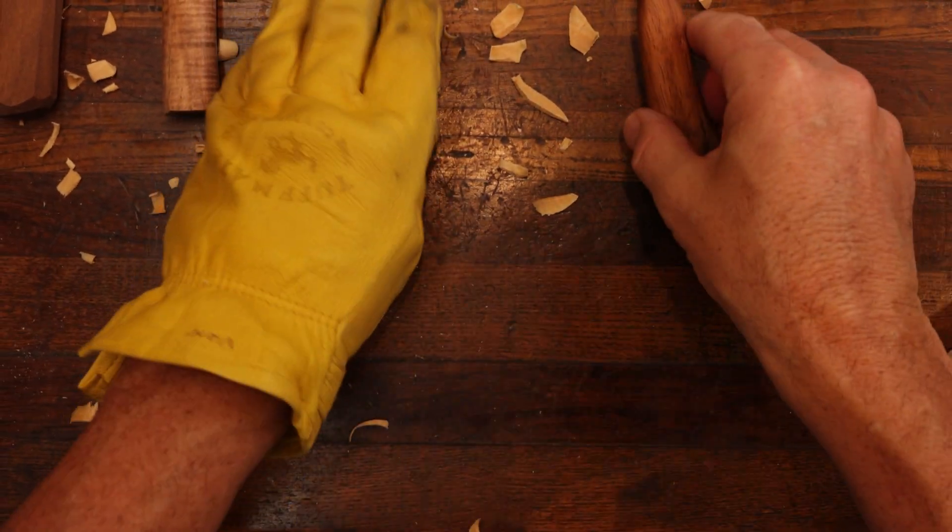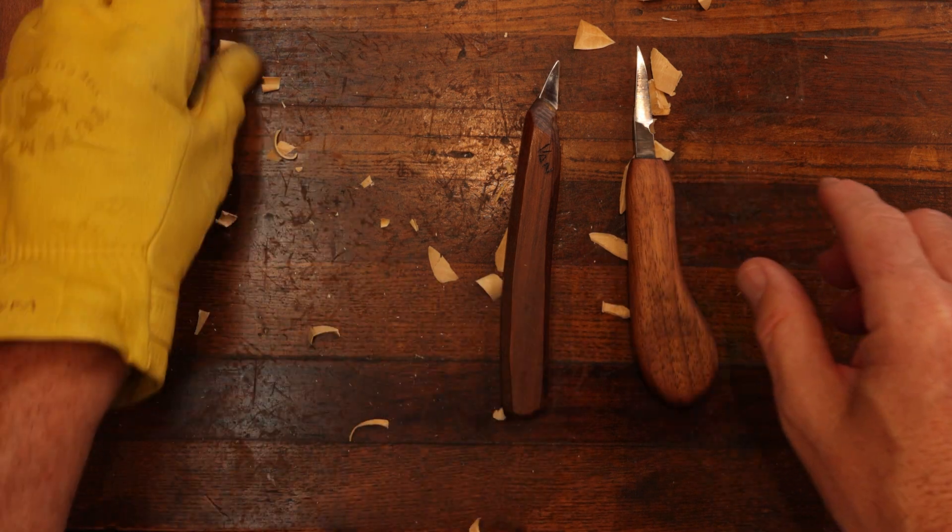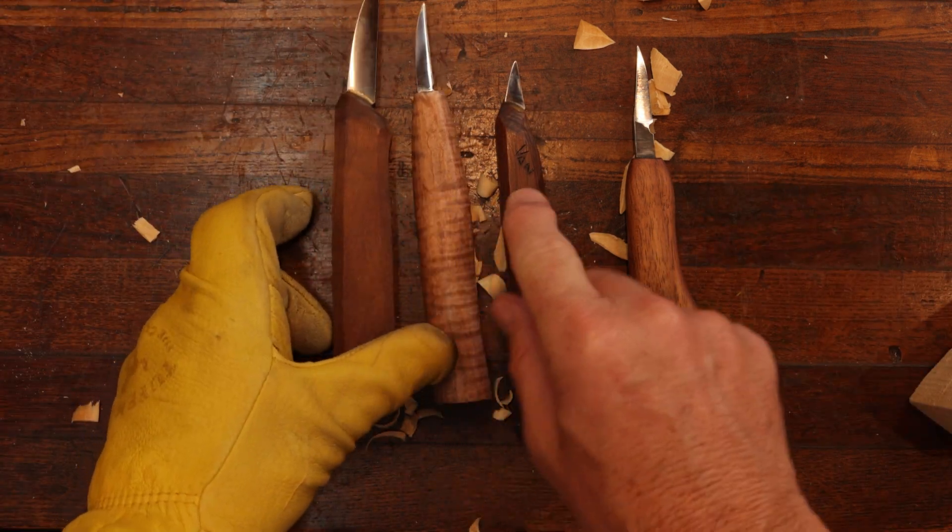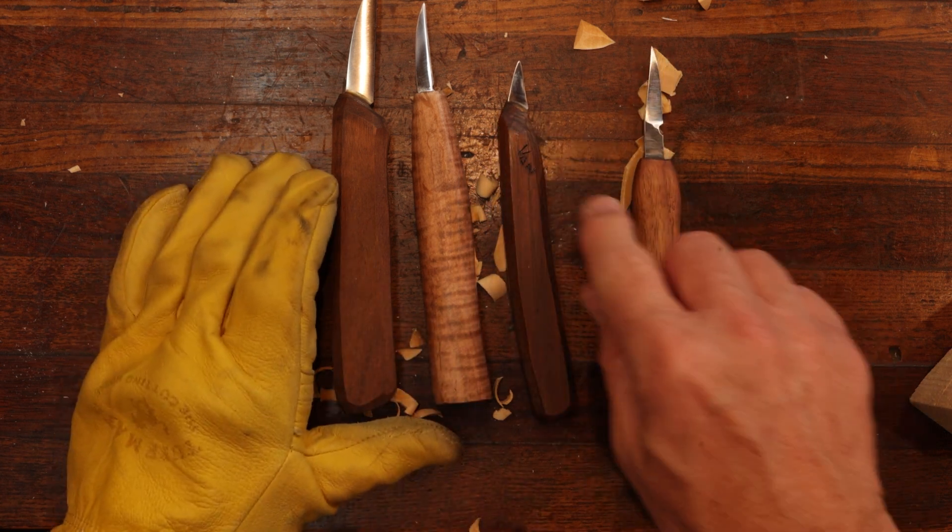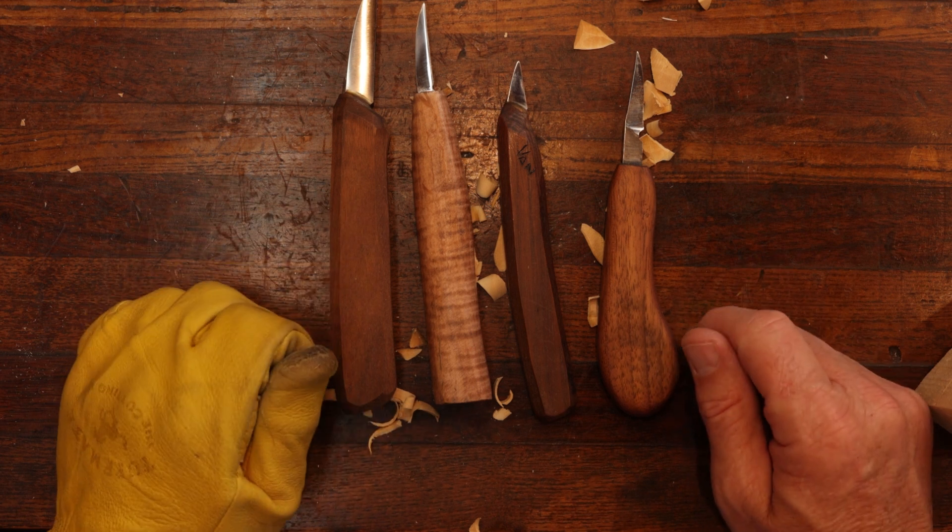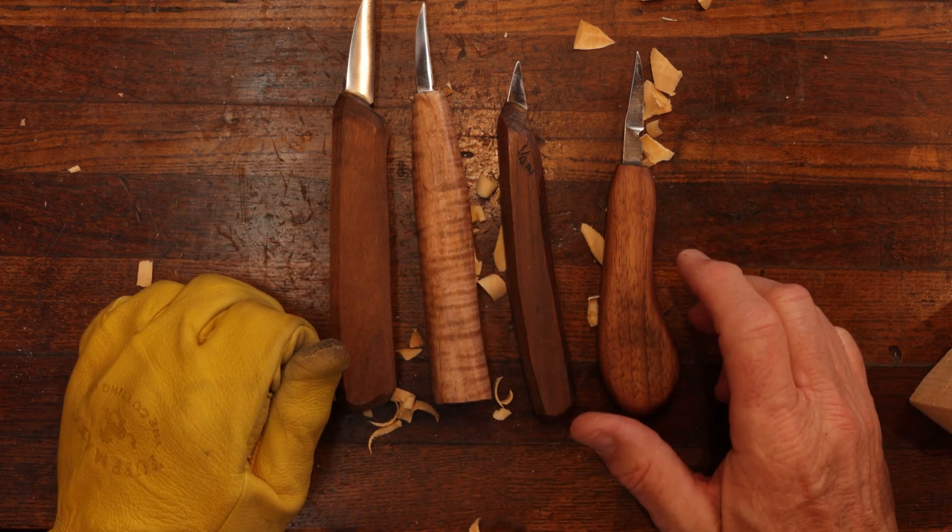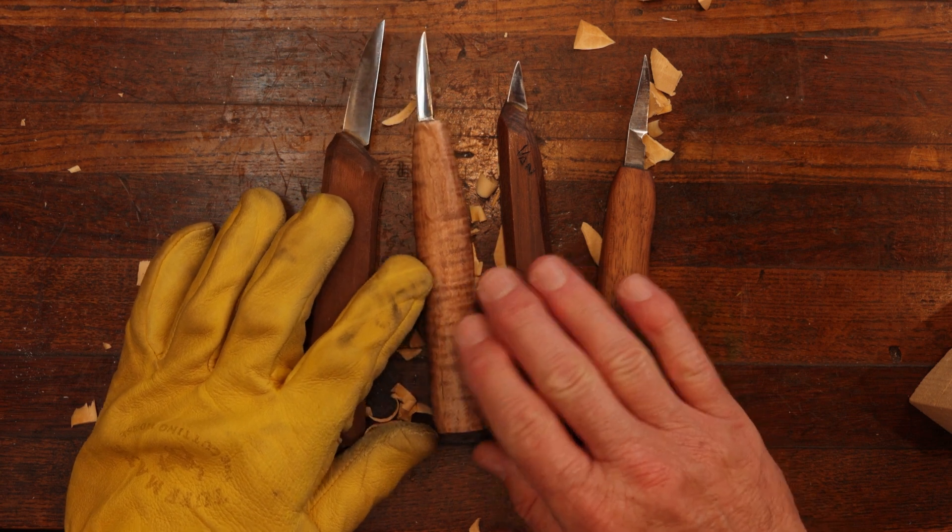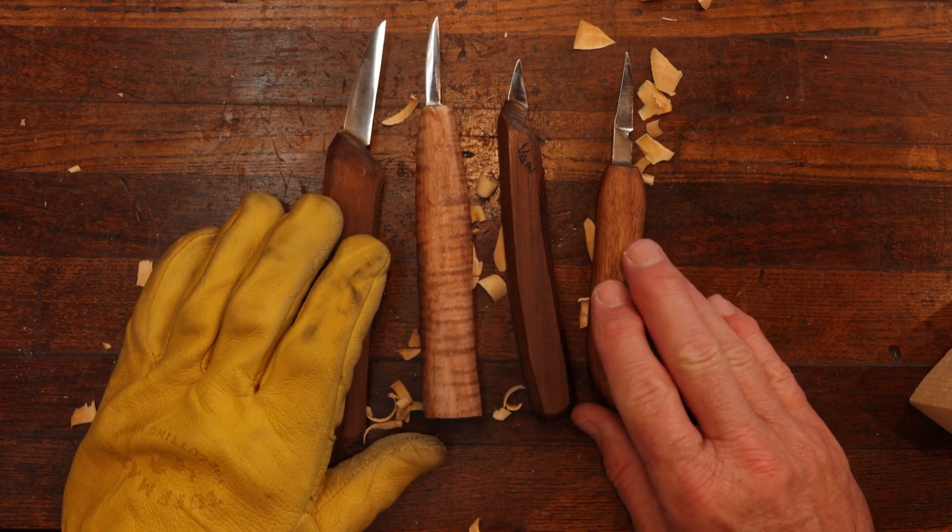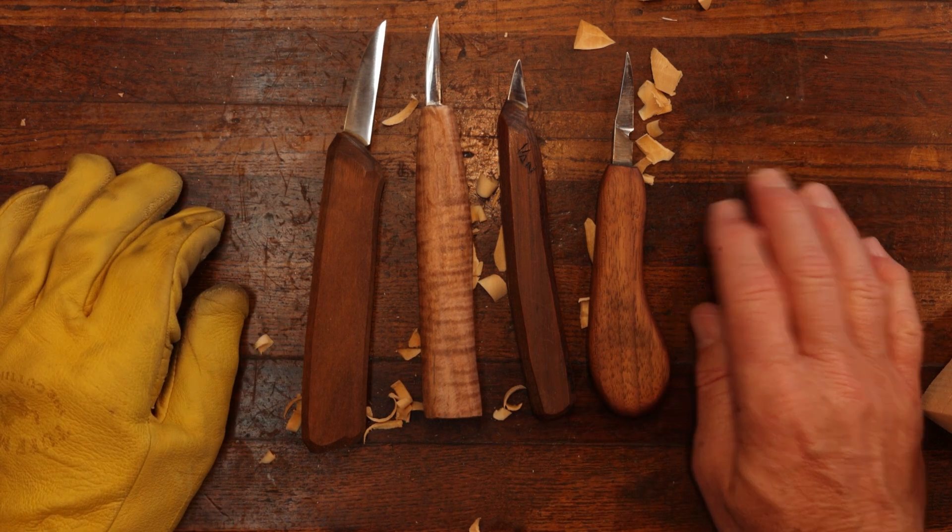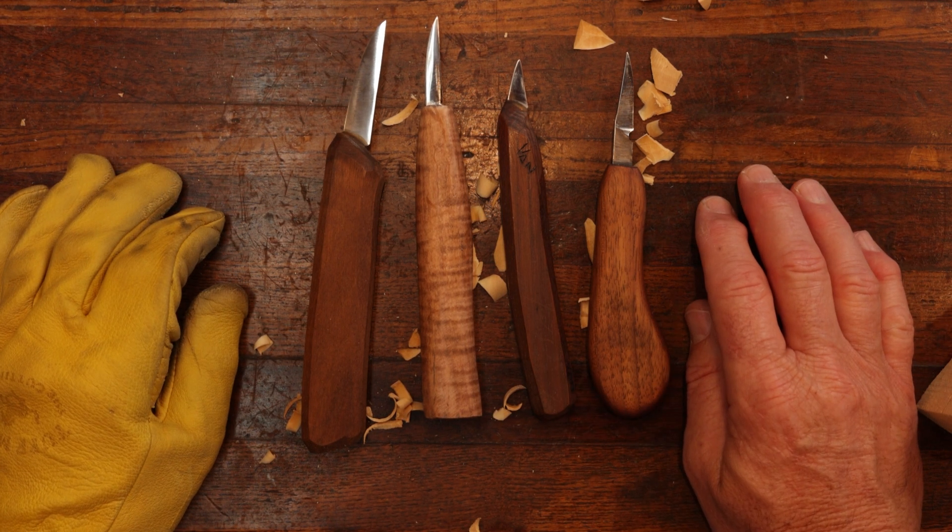So these four knives I'd recommend to you if you're getting started. Again, your roughing knife, your detailing knife, and your short bladed knife for detailing, and also for shadowing on your carving. So these will be four great knives that you can have in your tool bag or your caddy that will help you become a good carver by taking care of them and buffing them every day and using them the way they should be used.